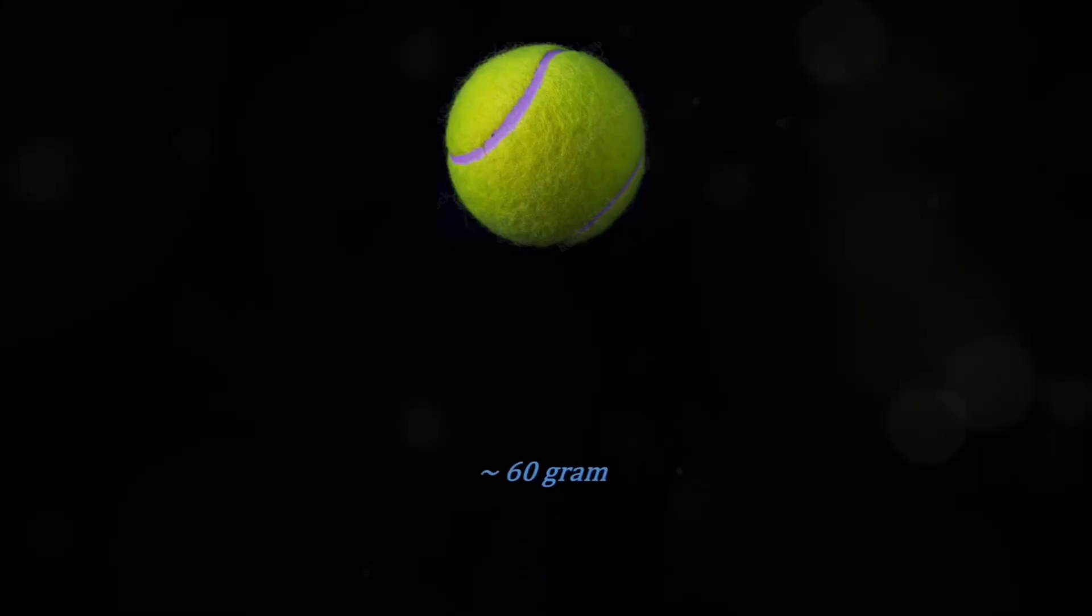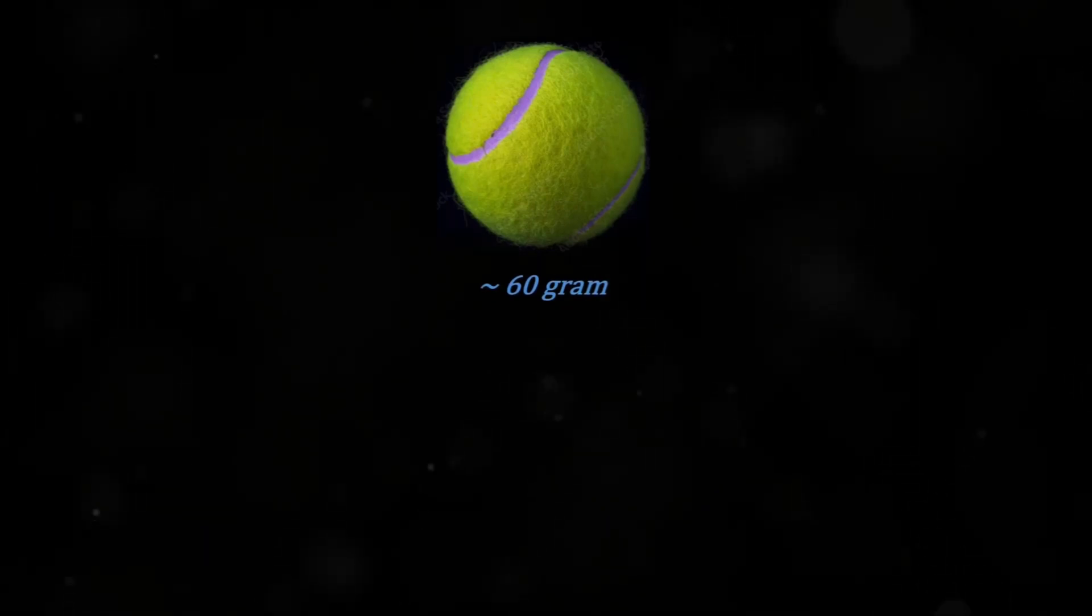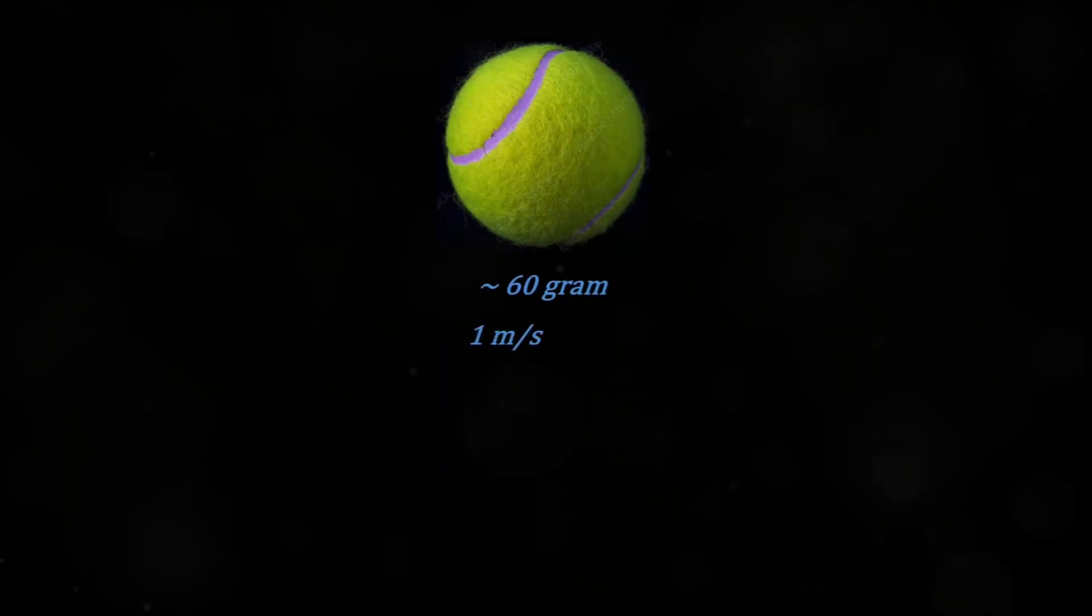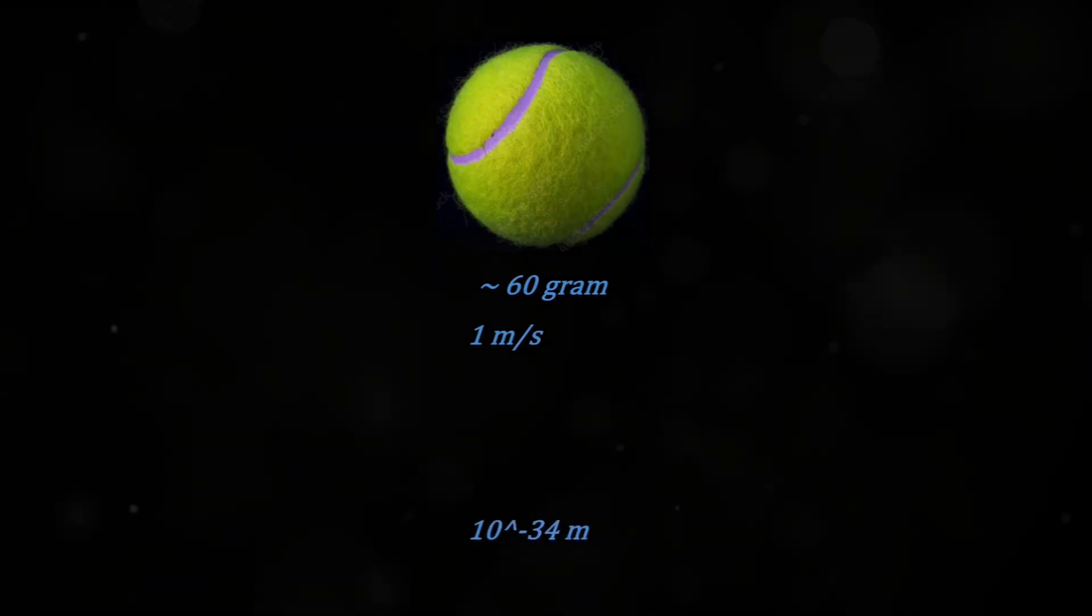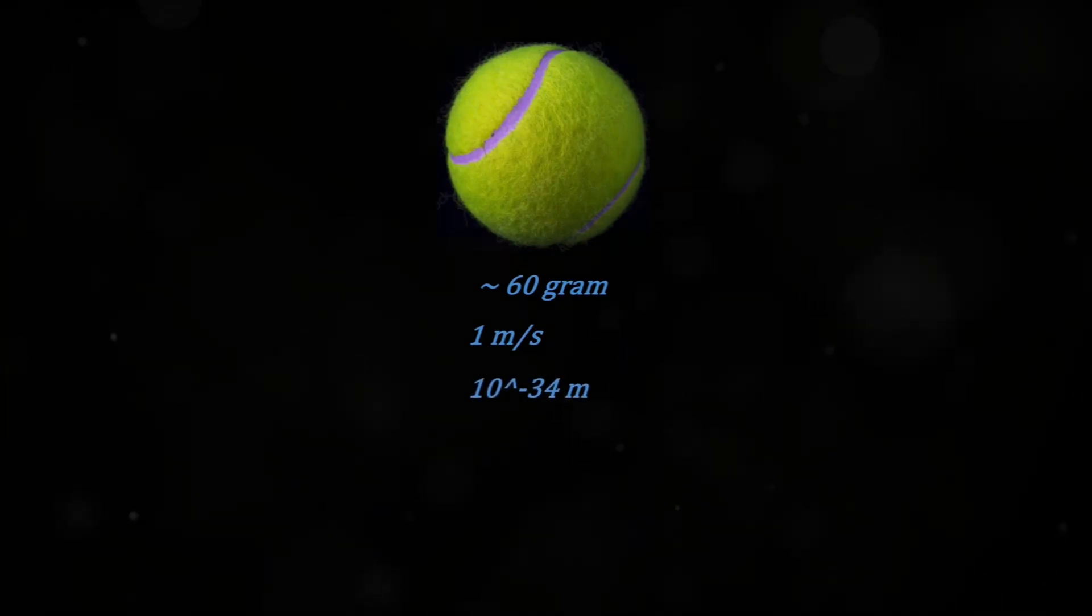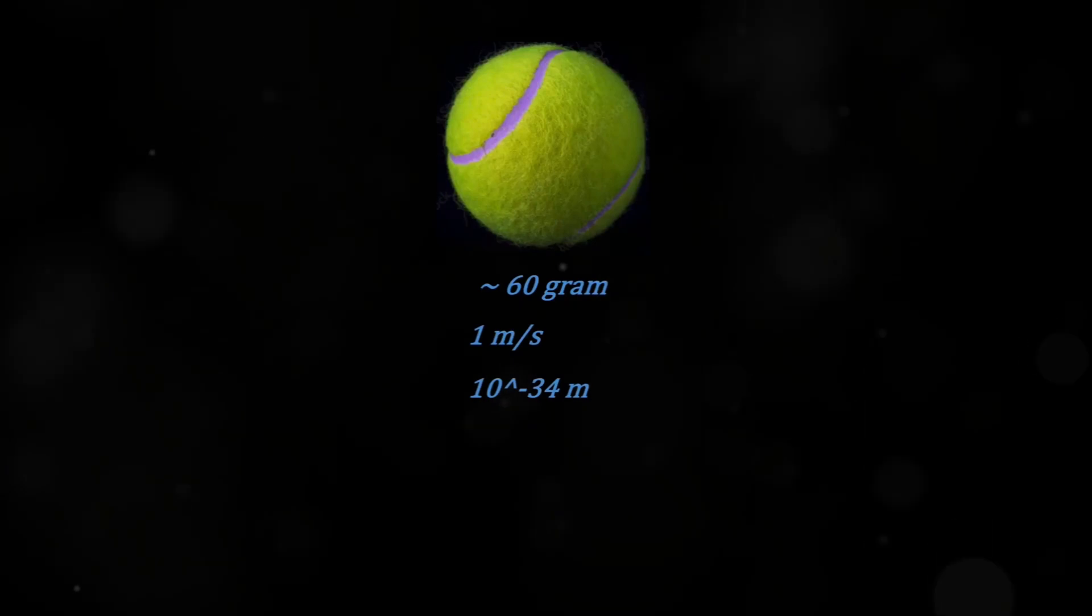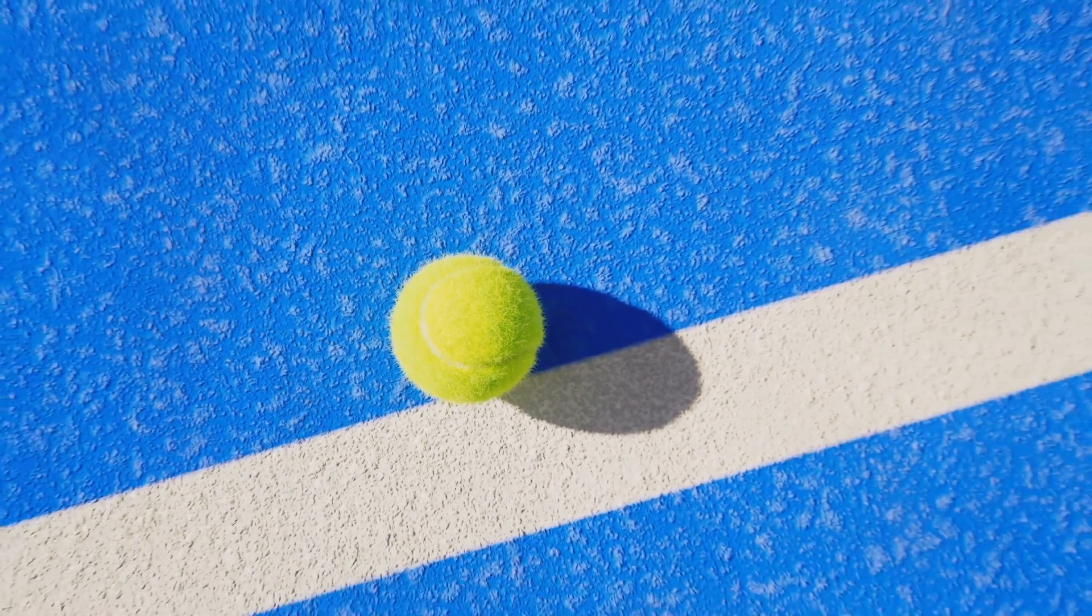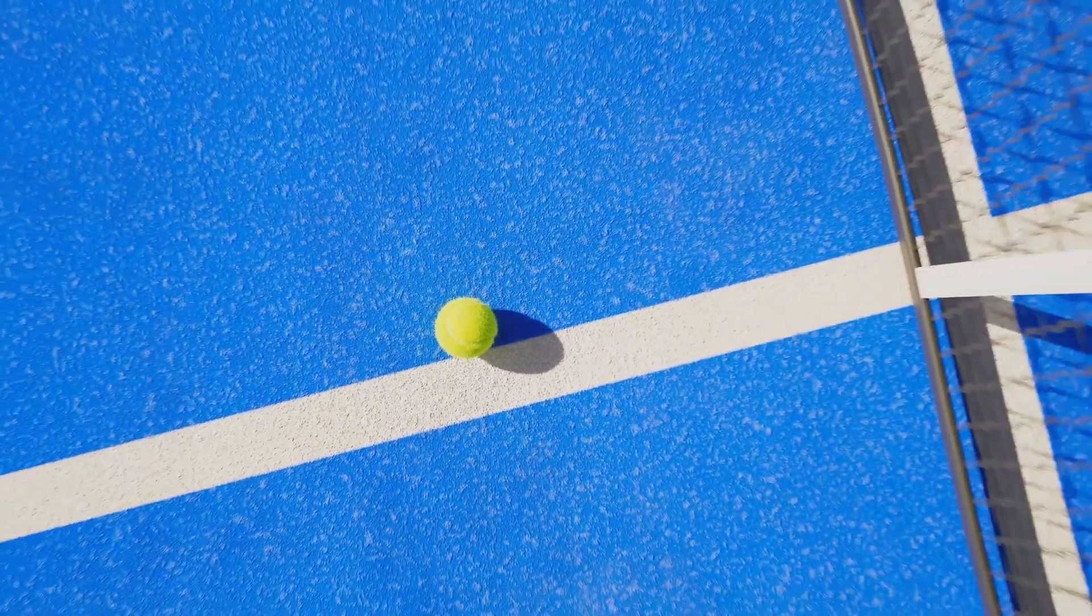According to de Broglie's equation, a large momentum means the wavelength is incredibly small. For example, the wavelength of a tennis ball which weighs around 60 grams and moves at a speed of one meter per second would be around 10 to the power of negative 34 meters, which is so small that it's completely undetectable. Its wave-like properties are so tiny that they don't influence its behavior in any noticeable way.